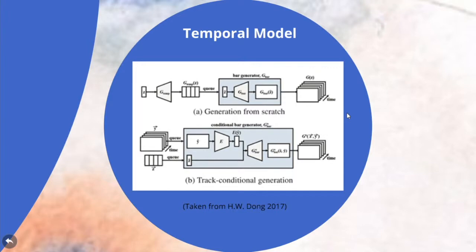To solve the problem that bar generators can only produce music with possibly no coherence among bars, MuseGAN proposes two methods. The first is to generate a fixed length of music. The second is to generate music conditioned on a given melody, where the input signal YT is a melody generated by MelodyRNN. It goes through an encoder to capture the main infrastructure of the input melody, and combined with another sequence of time ZT, the generator input is the combination of these two input signals.